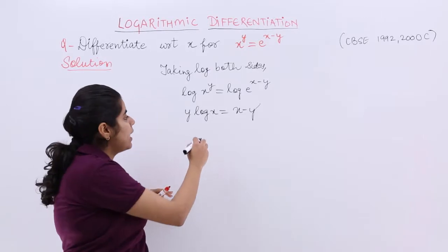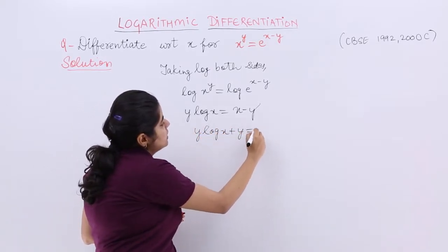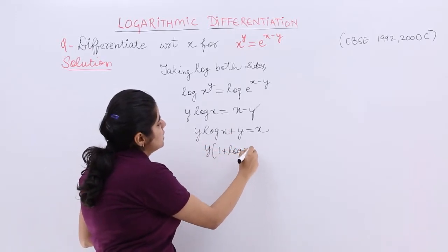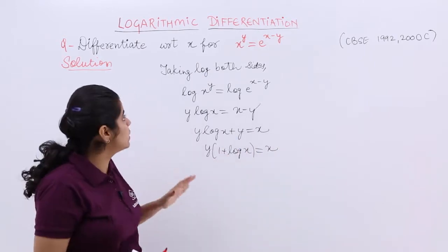Now here it is y. Here also it is y. Let's take y to the same side. So y log x plus y is equal to x. Take y common. Y times 1 plus log x is equal to x.